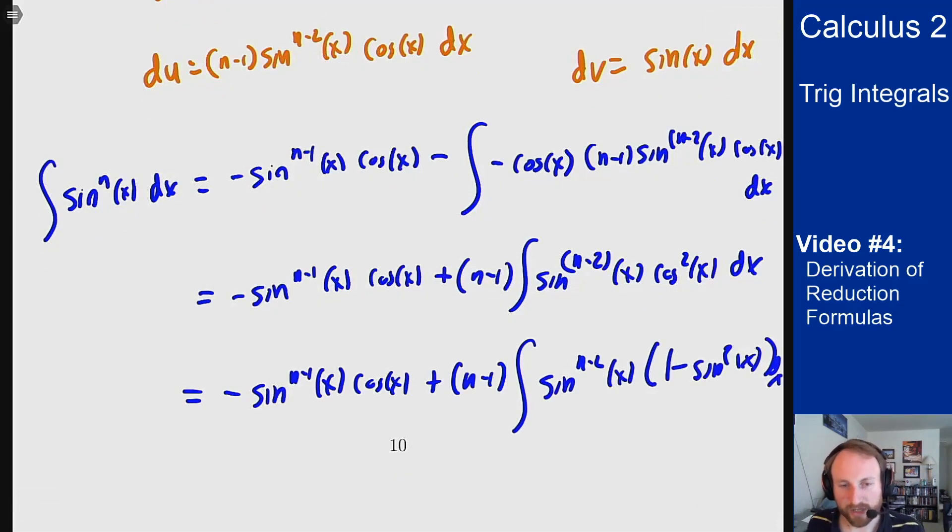So I'll rewrite that cosine squared as 1 minus sine squared which will give me that. And now I can split that last integral into two integrals and look at the problem and see if I can solve it from there. So we'll do that, and that gives us the following.